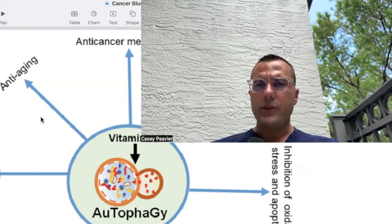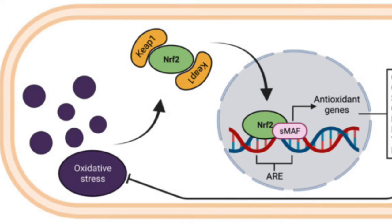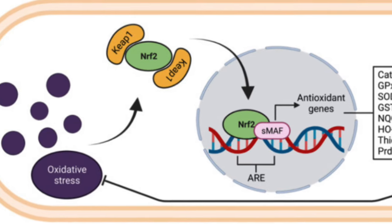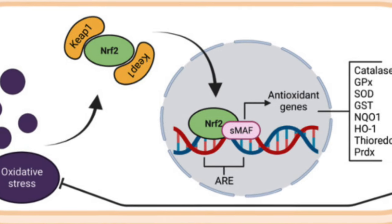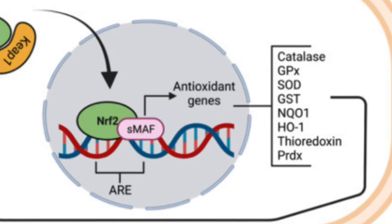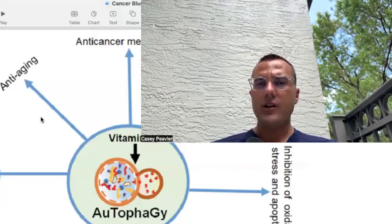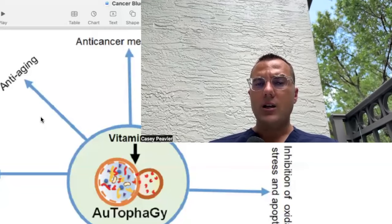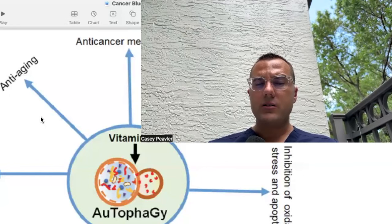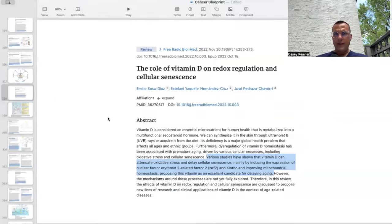What we'll learn during the redox series is that your body has many endogenous antioxidant systems. Many people have heard of things like glutathione — that's one of them. But there are various others: peroxidins, thioredoxins, catalase, superoxide dismutase, and various very powerful antioxidants that your body can create on demand when the redox state of the cell is imbalanced. And vitamin D is an important modulator of those systems — that's what I want to show you here.